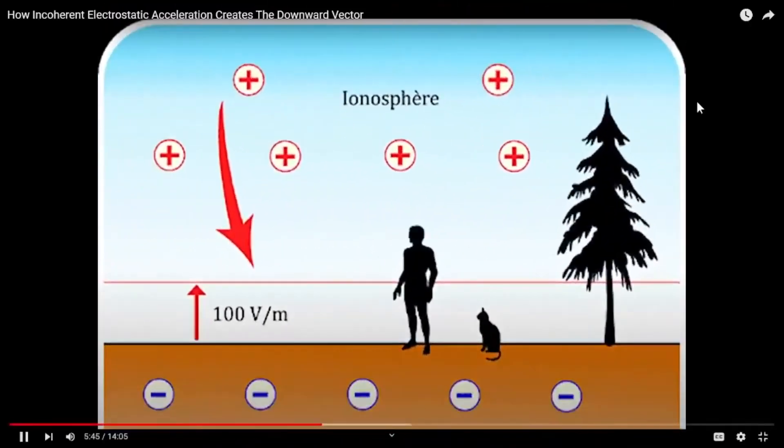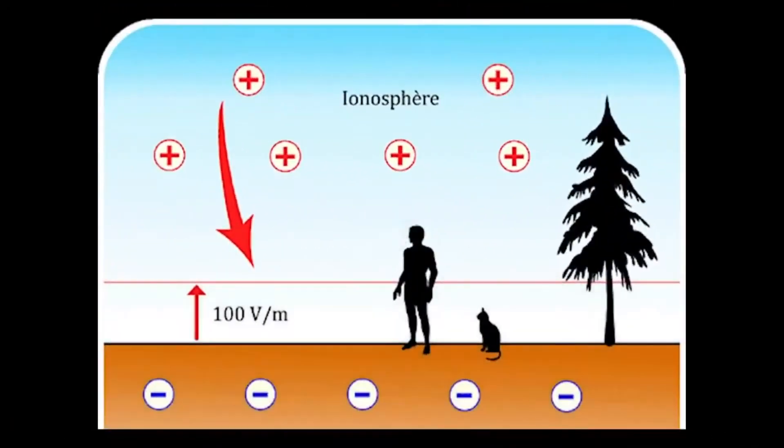So here on Earth, the positive charge on our bodies is always attracted down towards the Earth, and the negative will be attracted to the air above. This phenomena creates a slight force in that downward vector, because as soon as we leave the ground, we start becoming positively charged by the air around us, and are now forced towards the negative of the ground. This is electrostatic acceleration.